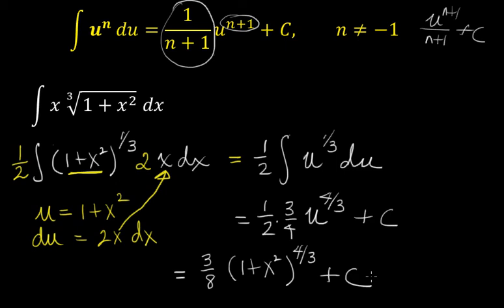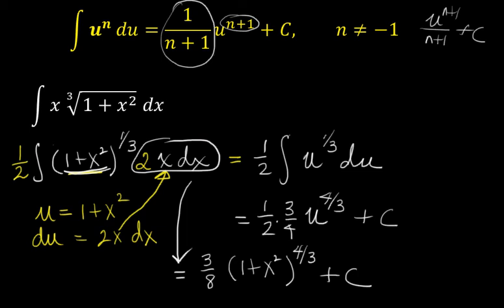I know that some of you have learned to do this differently, in a more mechanical way where you solve for dx. If you already know that, it's fine. If you'd like me to show it to you, come to office hours or ask me in class. For many examples where it's very clear what you're going to let u be, it's better to try to see this pattern — once you identify the 2x dx, you have u^(1/3) du and can go directly to the answer.